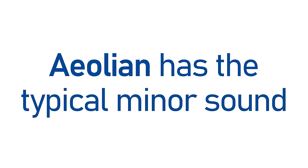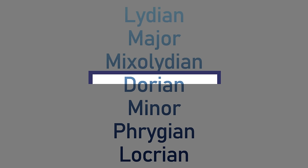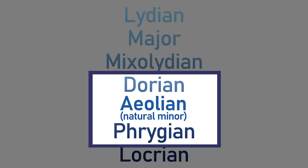Aeolian has that typically minor sound: solemn, dark, but not sort of scary, more just sad. But just like how the modes offer us three different major scales—the regular major scale, the slightly brighter Lydian, and the slightly darker Mixolydian—the modes also offer us three different minor scales: the natural minor, the aeolian, and then a slightly brighter version, Dorian, and a slightly darker version, Phrygian.